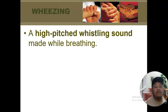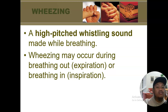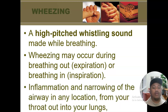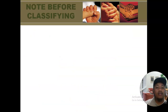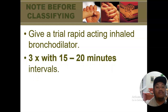Wheezing can be observed during either expiration or inspiration, but is most commonly heard during expiration. It is a common sign in patients with acute asthma attack or bronchoconstriction — basically inflammation and narrowing of the airway. Because wheezing is a common sign of asthma, we first give a rapid bronchodilator which is salbutamol — three times with a 15 to 20 minute interval. While doing this, you also need to assess the pulse rate as it may be affected.